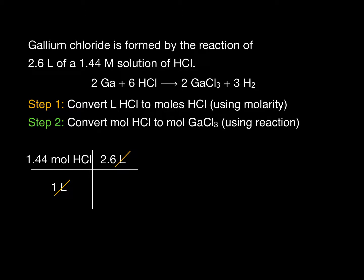Now that we have moles of HCl, we turn our attention to the balanced chemical equation. Here we can see that six moles of HCl produces two moles of gallium chloride. So let's position two moles of gallium chloride in the numerator, that's up on top here, and six moles of HCl in the denominator, that's down on the bottom of the fraction.